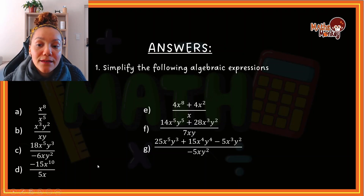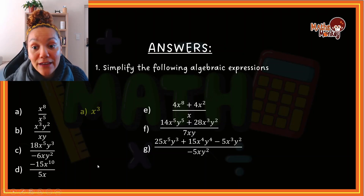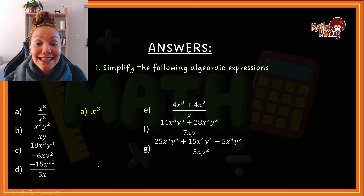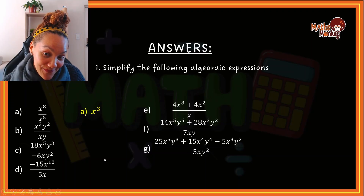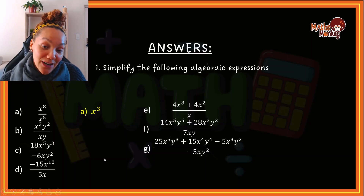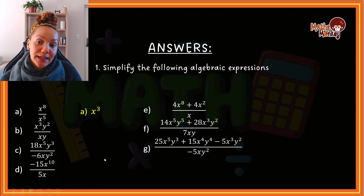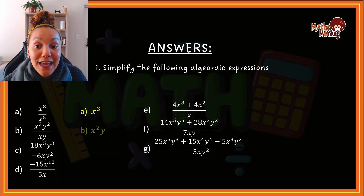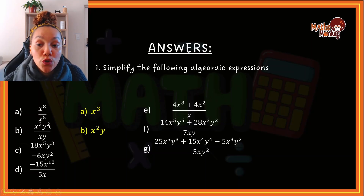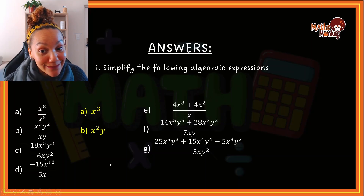The second one: subtract x — 3 minus 1 gives me x to the 2, and then 2 minus 1 gives me just the 1.